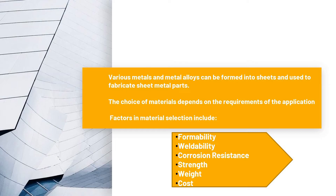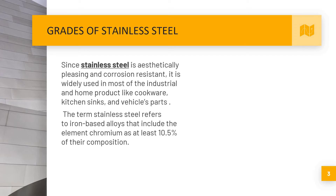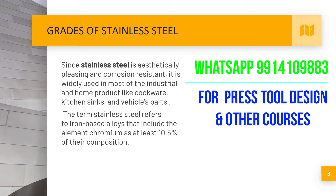These factors also include the metal grade because these terms and factors differ grade to grade. Since stainless steel is aesthetically pleasing and corrosion resistant, it is widely used in most industrial and home products like cookware, kitchen sinks, and vehicle parts. The term stainless steel refers to iron-based alloys that include the element chromium at least 10.5% of their composition.